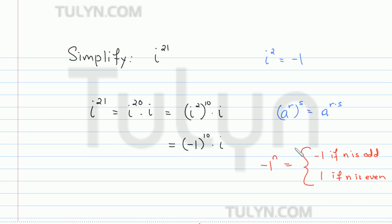For example, negative 1 squared is always positive 1. So since 10 is an even power, negative 1 to the 10th is just going to be positive 1 and then times i. So the final result is just going to be i.